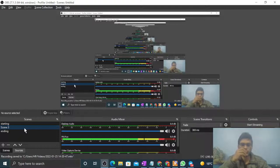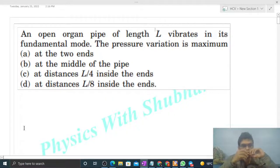Okay, hi everyone. So today let's discuss one interesting problem. It says an open organ pipe of length L vibrates in its fundamental mode. The pressure variation is maximum. So what is given - we have an open organ pipe.